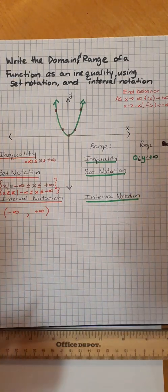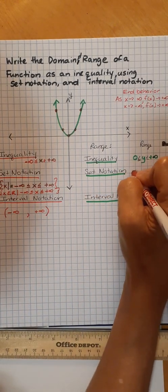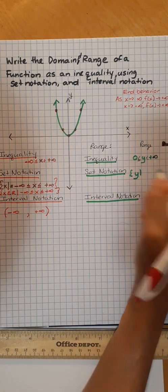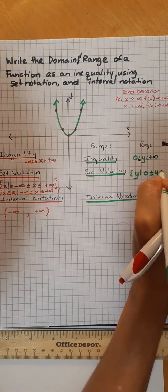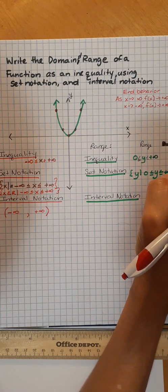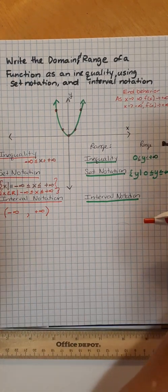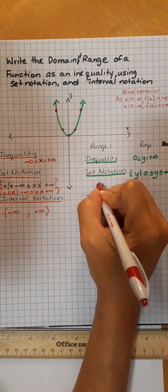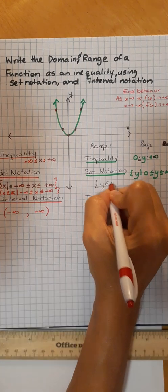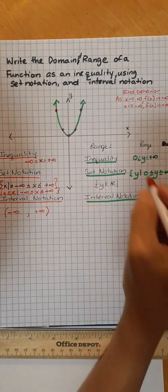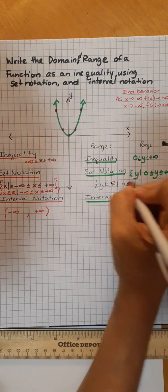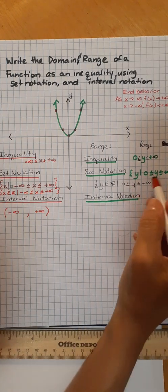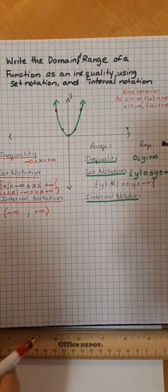Now we're going to use that inequality and write it in set notation. It's a squiggly line, y such that zero ≤ y ≤ positive infinity, squiggly line. And if we were to write it adding that it's an element of the real numbers, we would write y, don't forget the squiggly line, element of the real numbers such that zero ≤ y ≤ positive infinity. The only difference is you're just adding that it's an element of the real numbers.